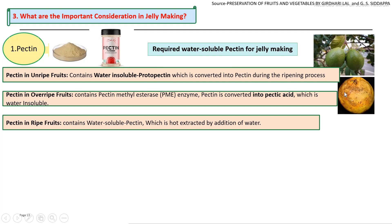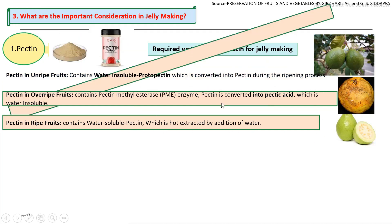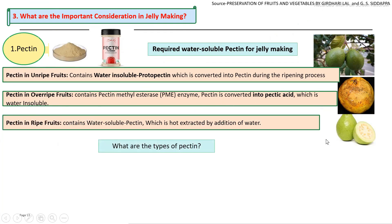Overripe fruits convert pectin into pectic acid, which is also not suitable for jelly manufacturing. Properly ripe fruits convert protopectin into pectin, which is good for the jelly manufacturing process.